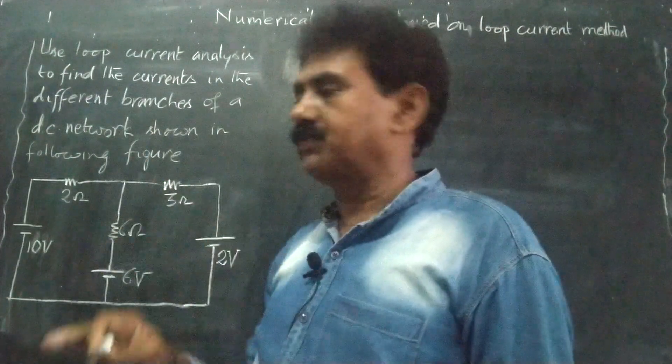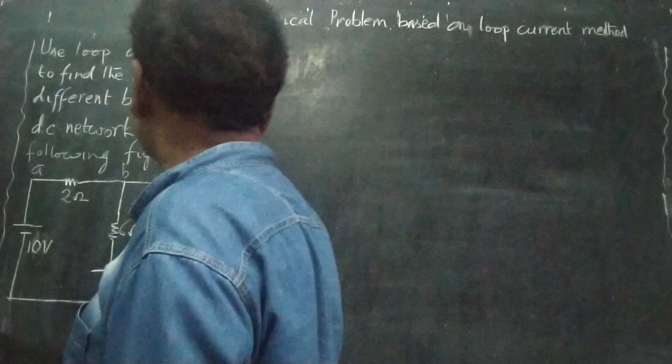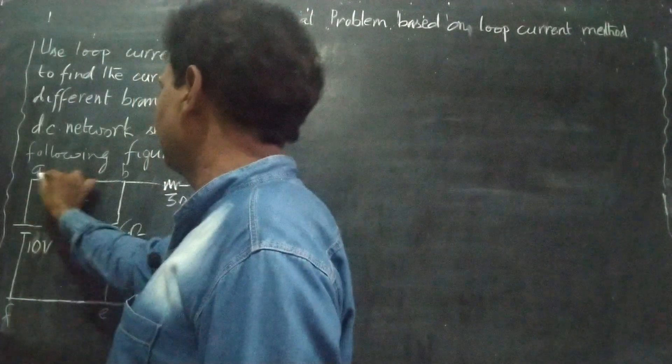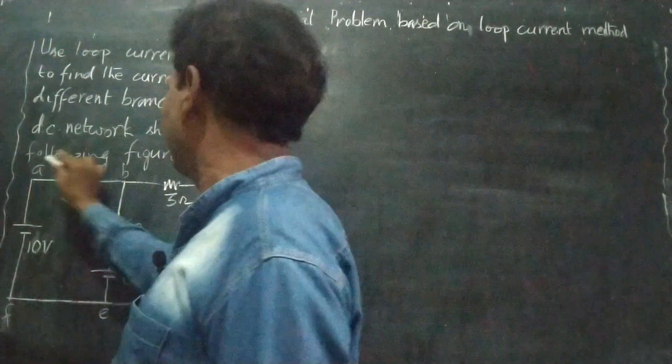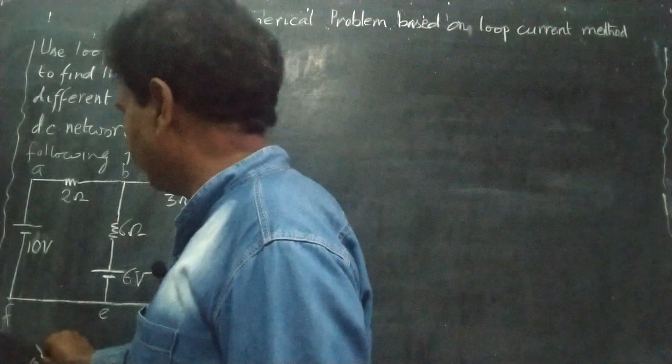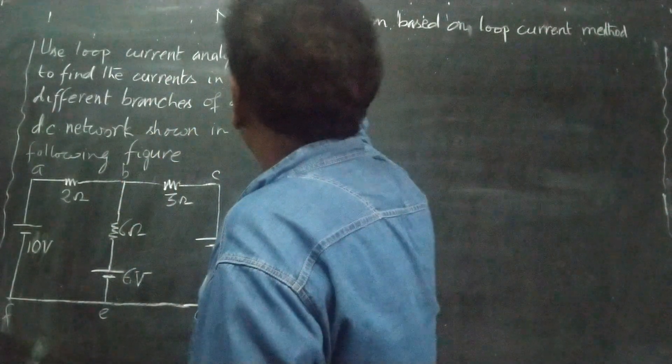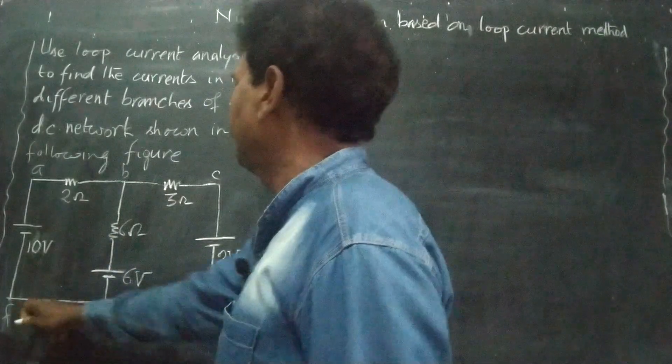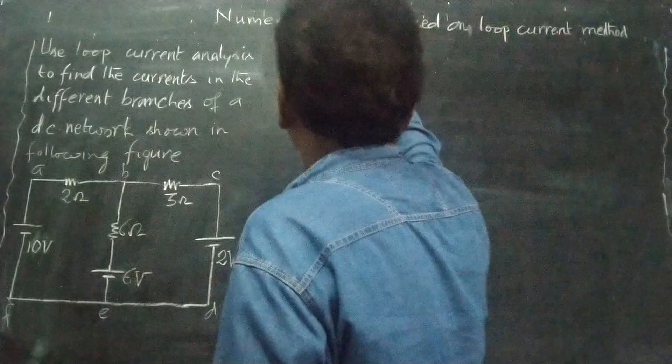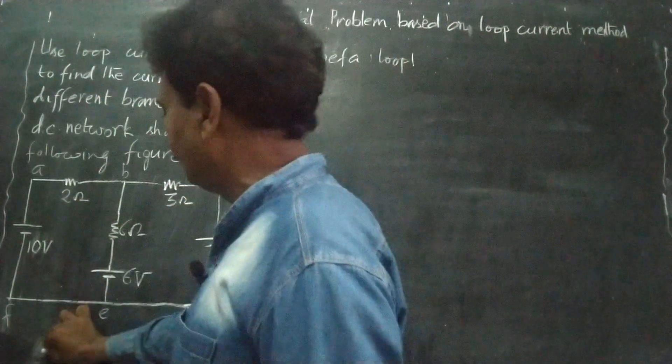Loops means closed path. So here, let us see. Let me label: A, B, C, D, E, F. Then here, A, B, E, F, A. This one, A, B, E, F, A. This is a closed path. Say it loop one. This one, what we have seen, loop one.